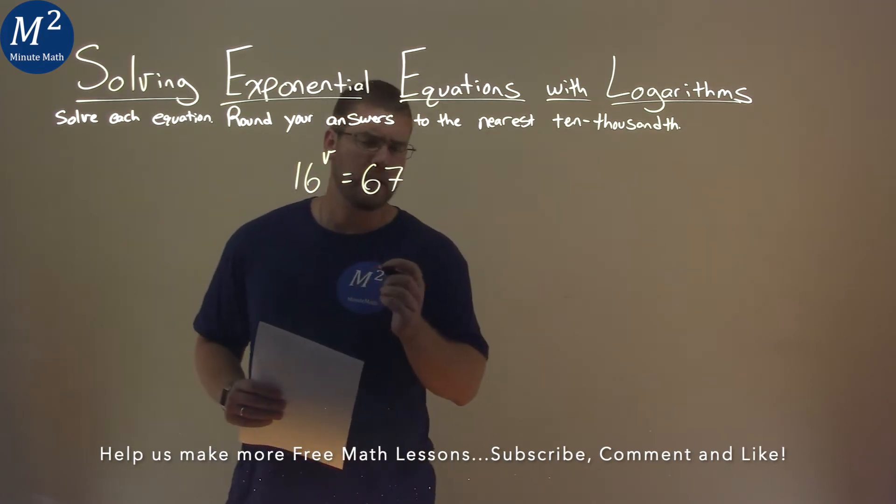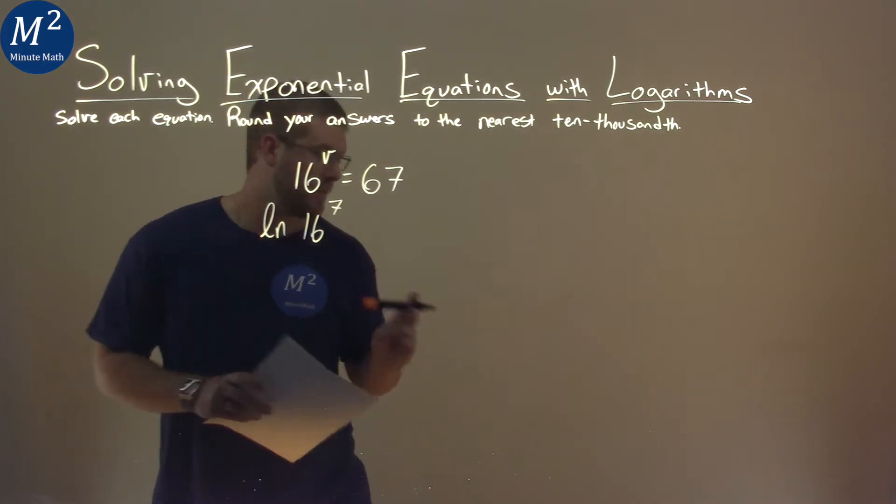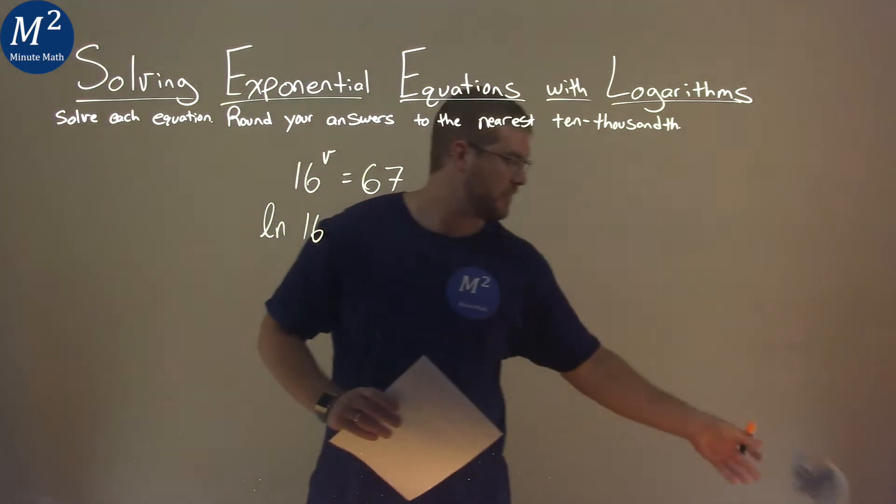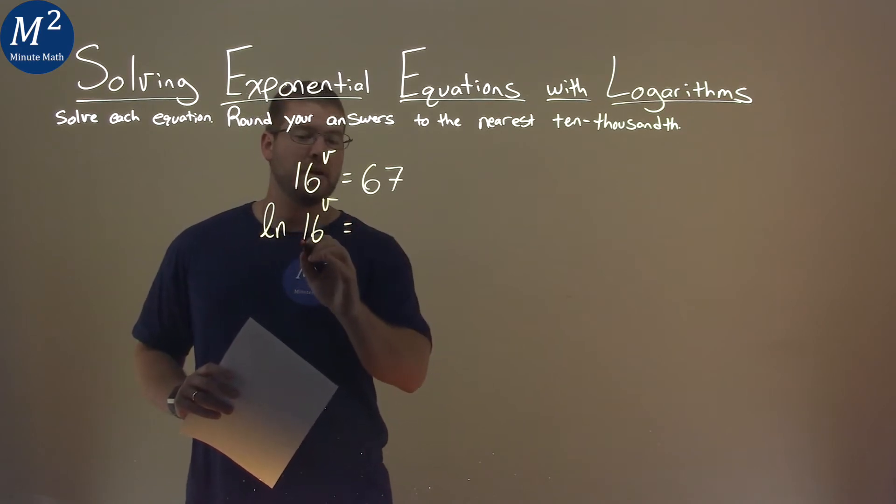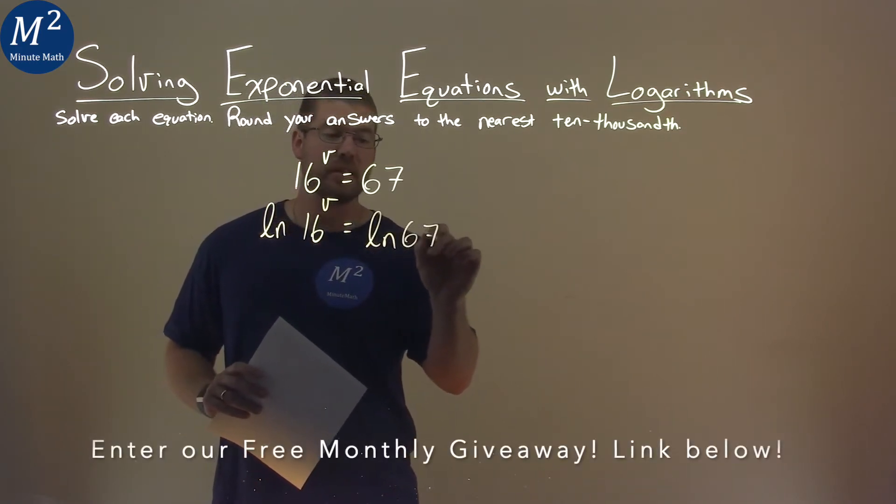One thing we know about logarithms is that if I take the natural log of both sides, which I'm allowed to do, but it's not a 7, it's a v. I take natural log of 16 to the power of v is equal to natural log of 67 here.